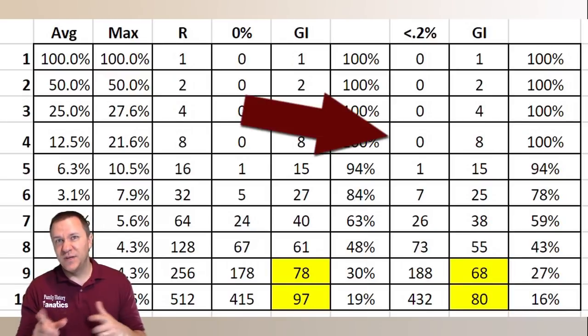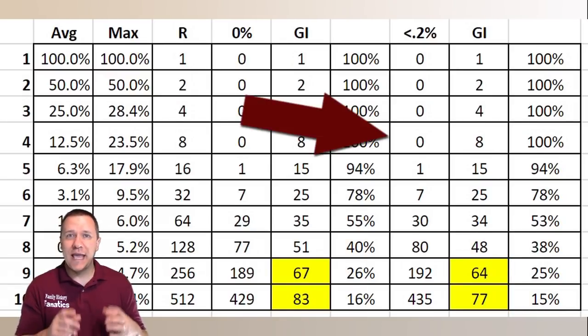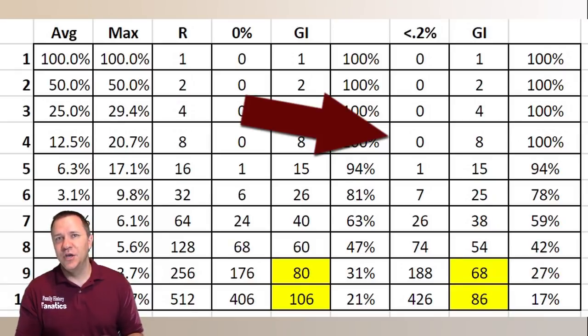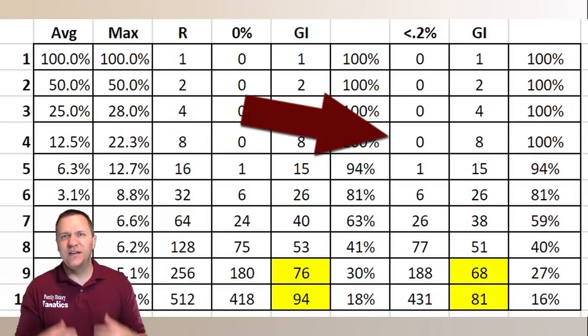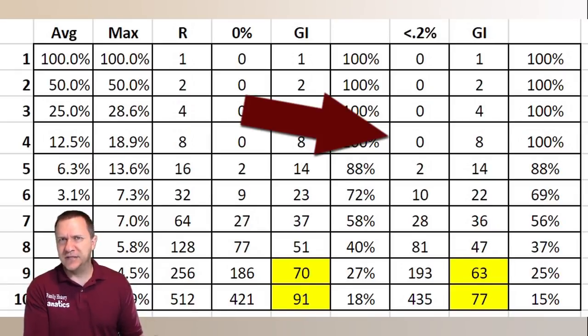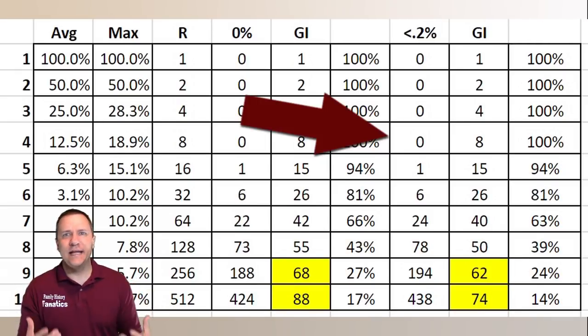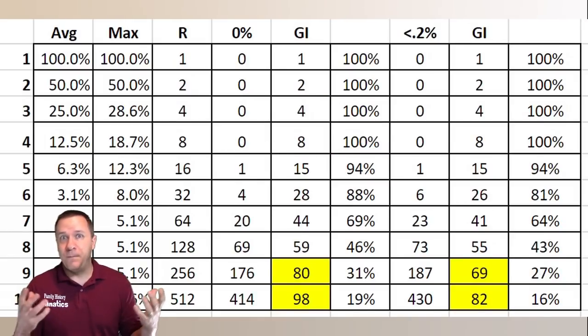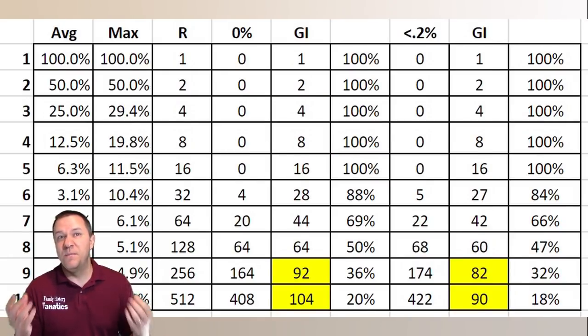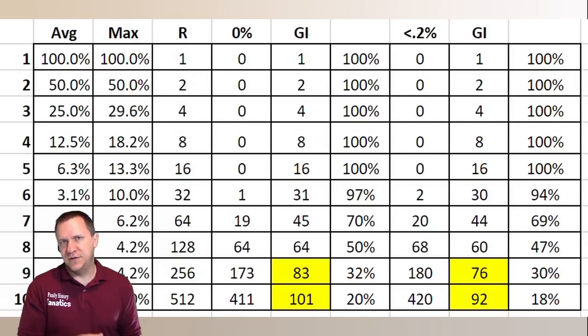Now the last three columns are important because it's looking at the amount of DNA you share with people that is really detectable as a match. So because humans share so much DNA there are chance opportunities where we appear to share DNA with other people but we're not actually related to them.